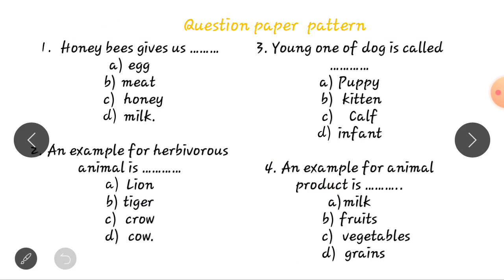Now, I just take the answers. Honey bees gives us honey. An example for herbivorous is cow. Young one of dog is called puppy. An example for animal product is milk.